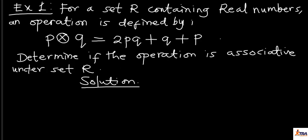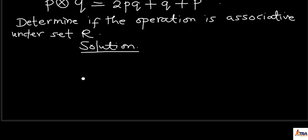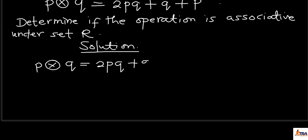We'll now take an example. We are given a set R containing real numbers, and an operation p ⊕ q defined as 2pq + q + p. We are asked to determine if this operation is associative. To do that, we need to compare the left-hand grouping to the right-hand grouping according to the rule of associativity.